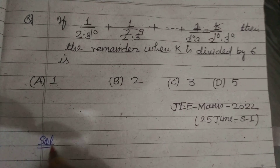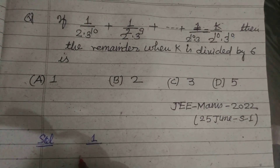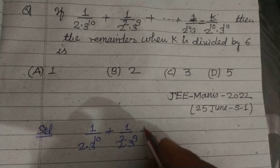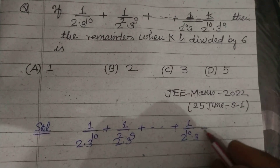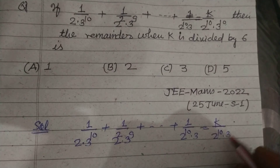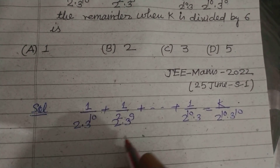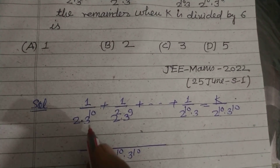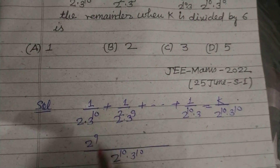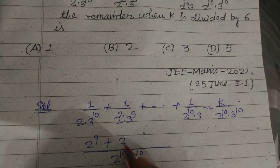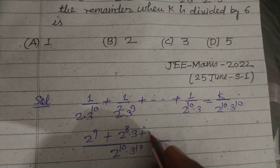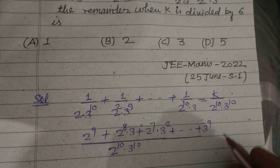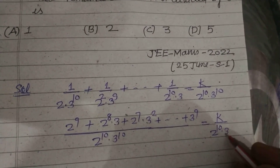We write the given expression: 1/(2 · 3^10) + 1/(2^2 · 3^9) + ... + 1/(2^10 · 3) = k/(2^10 · 3^10). Here 2^10 · 3^10 is the LCM. This becomes 2^9 + 2^8 · 3 + 2^7 · 3^2 + ... + 3^9 = k/(2^10 · 3^10).